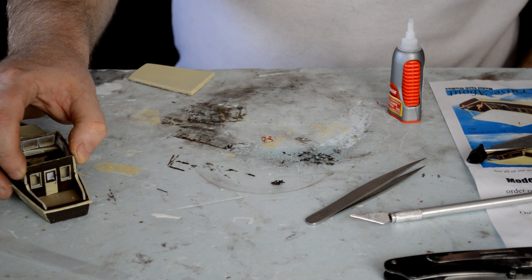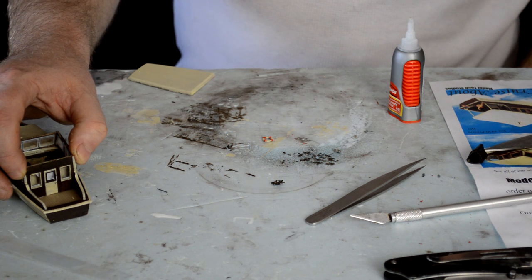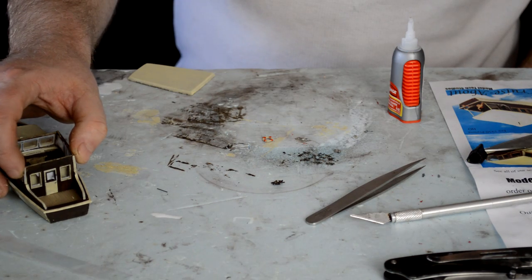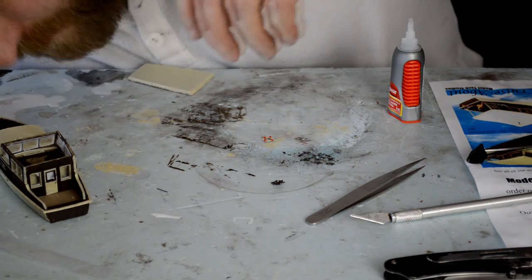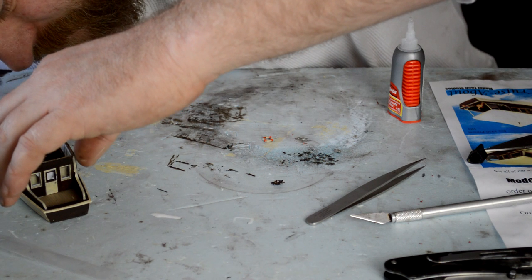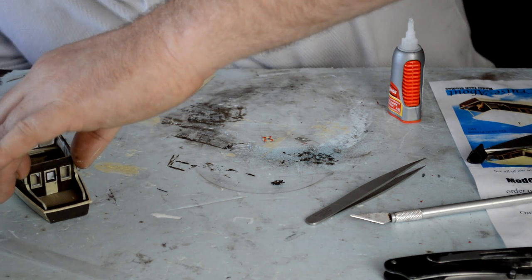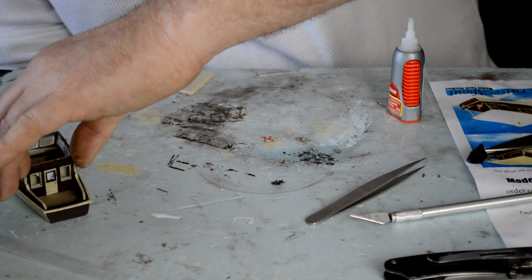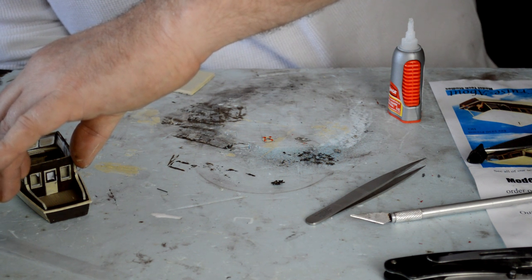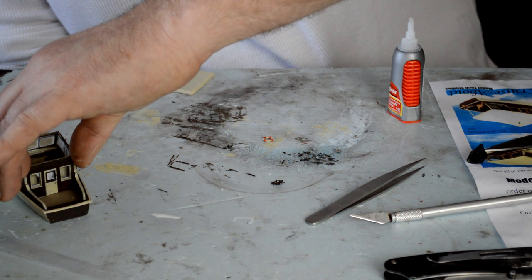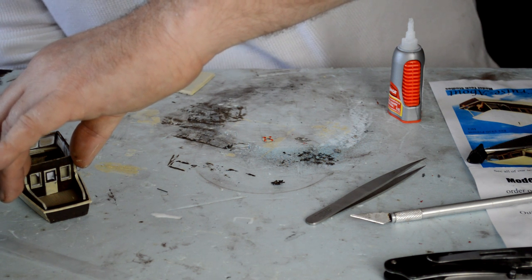I like to hold my parts in place while the CA sets. It only takes a few seconds for it to stick. But be careful. If you have wet CA around window glazings, it will add a white film on your windows. So don't add too much CA around window glazings or you'll find out the hard way like I did.